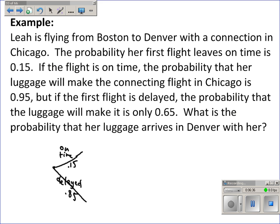Okay. Then from there, her luggage arriving on time, given that her first flight was on time, is 0.95. Okay. The fact that missing it is 0.05, we won't use that. If the first is delayed, which is more likely, the luggage making it would be 0.65, and her missing it would be 0.35, although we won't use that.